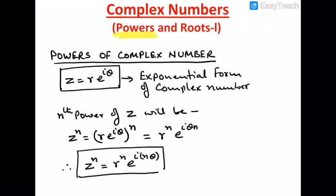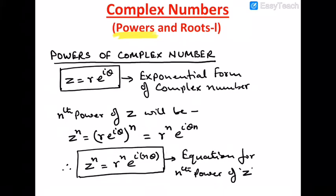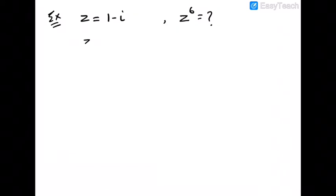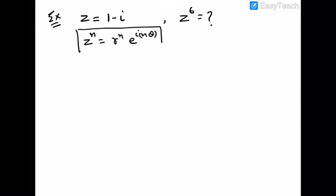So this is the equation for nth power of complex number z. Now let's take an example where z equals 1 minus i and we need to find z to the power 6. We know the formula: z to the power n equals r to the power n, e to the power i n theta.